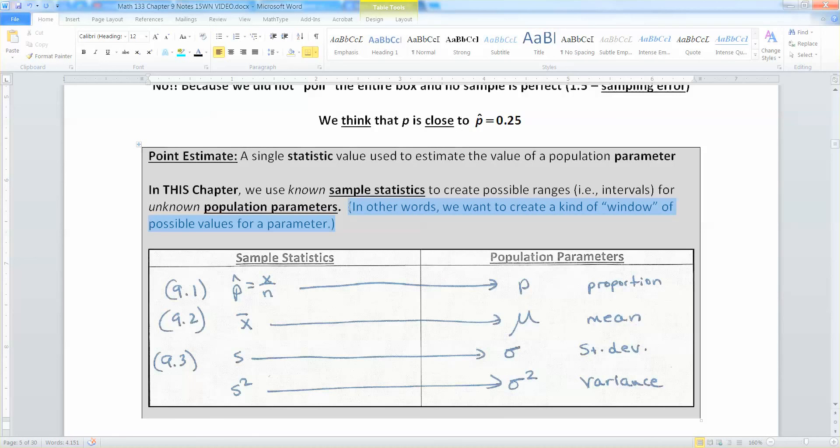That's the general gist of it. So the sample statistics we've used are P hat, which is X over N. So you take P hat, and then you build an interval from it, and you think P is going to fall in that interval. In section 9.2, we're going to take X bar, we're going to build an interval from X bar, and then we think that mu will fall in that interval. Mu being the population mean, P being proportion.